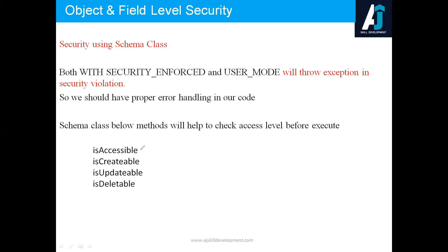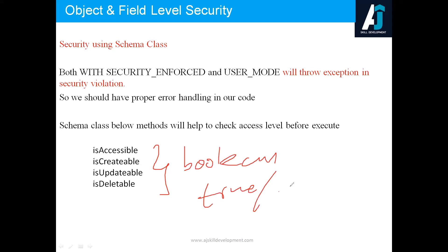In Schema classes you have a couple of methods, and all of them are boolean — they return true or false. The first method is isAccessible, which checks whether the user has access on the object or on a specific field. Similarly, isCreatable checks create permission, isUpdatable checks update permission on a field, and isDeletable checks whether the user has delete permission on the object.